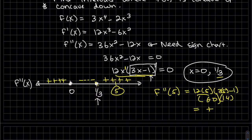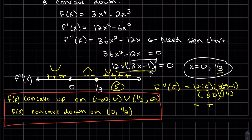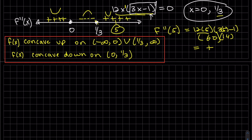So finishing this problem: the function is concave up, then concave down, then concave up. To answer the question formally, those are the intervals of concavity for our function f.